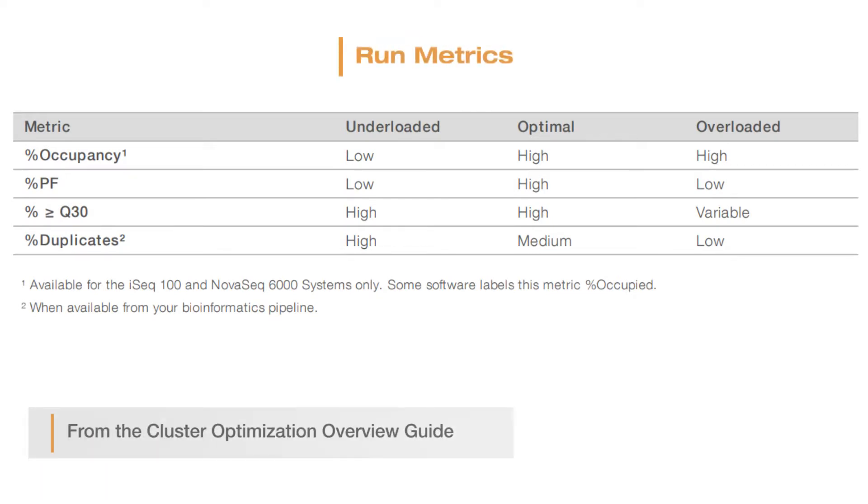In this chart, you can see how these metrics will deviate. The low, medium, and high designations are meant to be relative to typical metrics seen on an instrument.